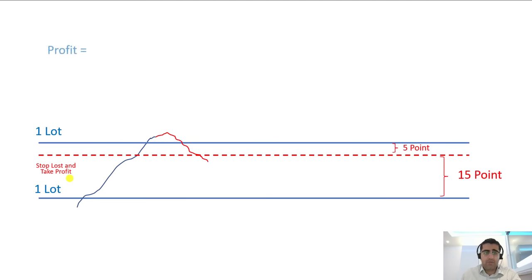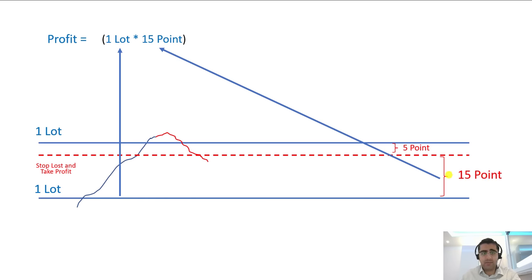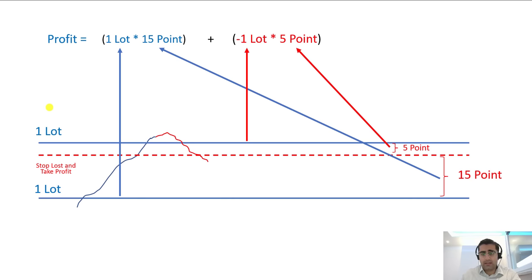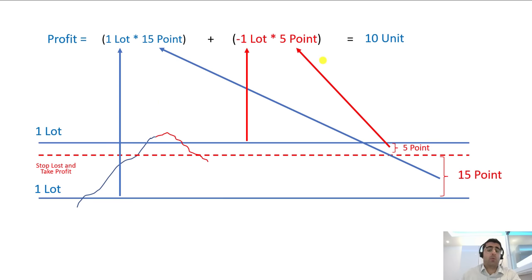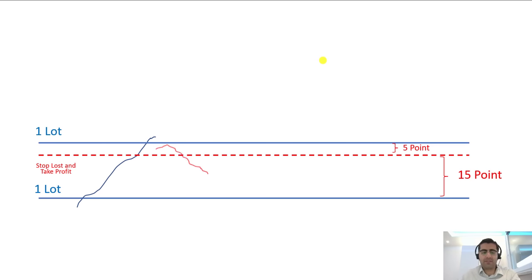We calculate the profit in this scenario. The profit would be: 1 lot × 15 points for the first order, plus (−1 lot × 5 points) for the second open order which lost 5 points, and the result would be 10 units. So if we hadn't done that, we would have gained 20 units, but now we only gained 10 units. However, we continue and consider other scenarios.